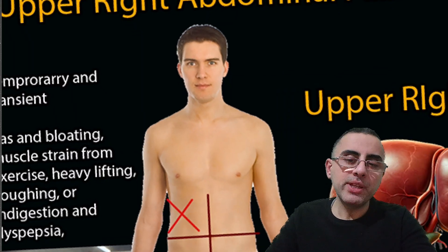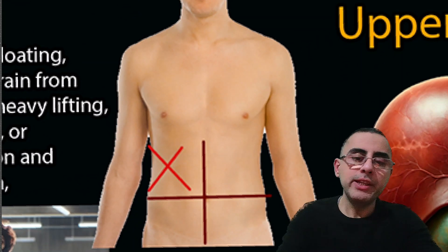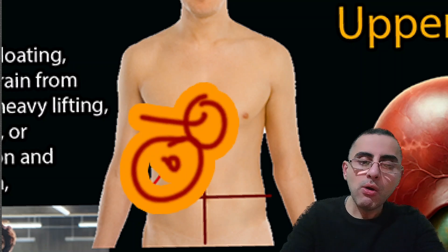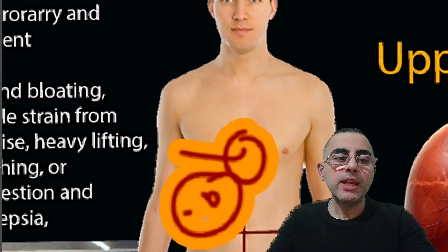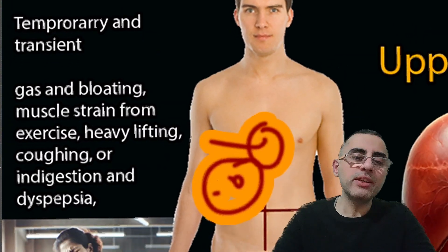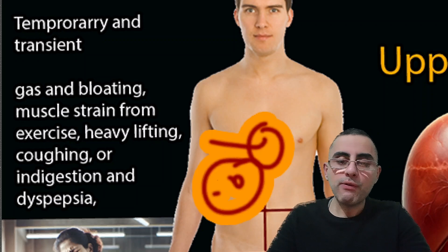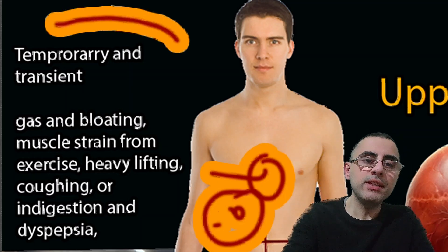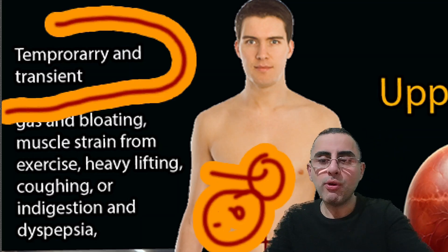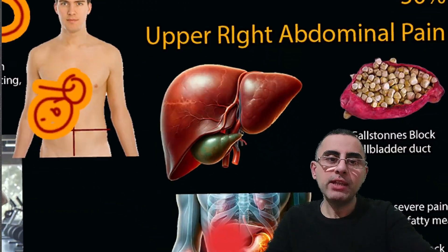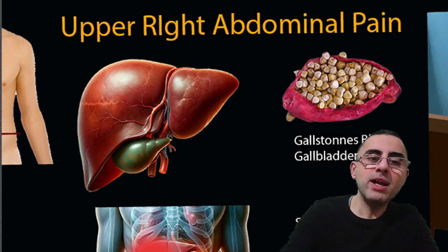If you have upper right abdominal pain, you may think about liver problems, lung problems, gastric problems, gallbladder, or kidney problems. But if this pain is temporary and transient, most commonly it is gas and bloating or muscle strain from exercise, heavy lifting, or coughing. In most cases, if it's temporary and mild, it's not a problem.